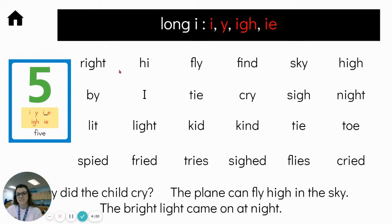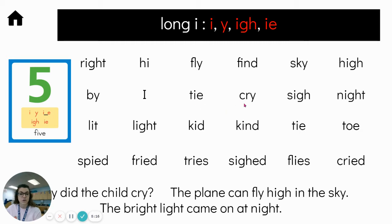Write. High. Fly. Find. Sky. High. Second line: buy. I. Tie. Tie. Cry. Sigh. Night. Wonderful.